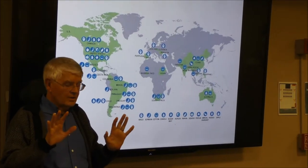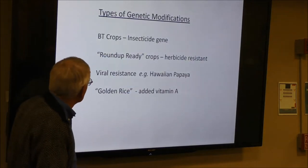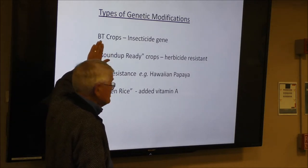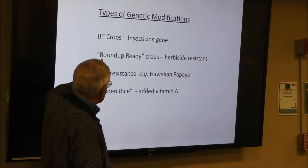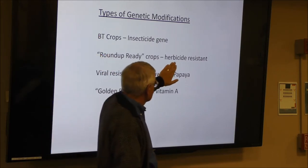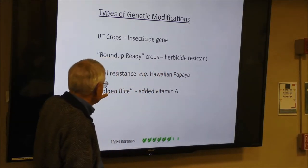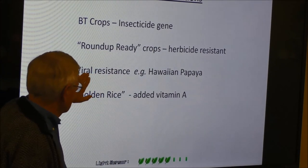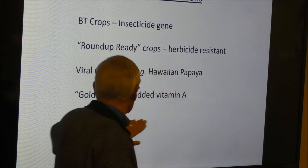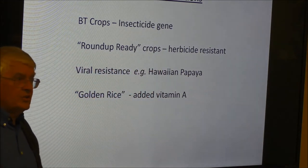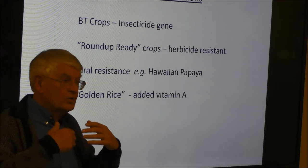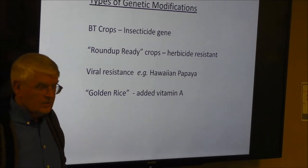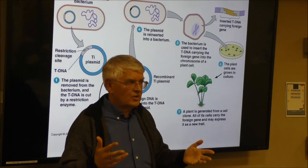I'm going to tell you about four stories here. One is the BT toxin, which is an insecticide. Second, the Roundup Ready crops — a herbicide. Third, using GMOs for plant diseases, with a good example being the Hawaiian papaya. And lastly, the idea that you can make a plant more nutritious — the golden rice story. So let me start by asking: how do you make a GMO plant?